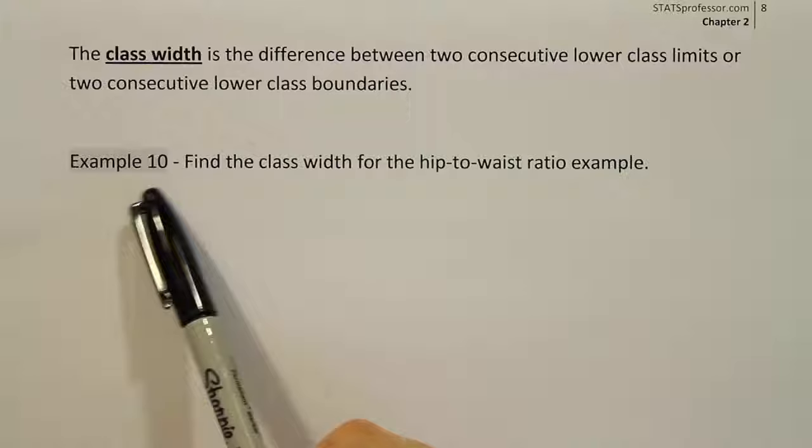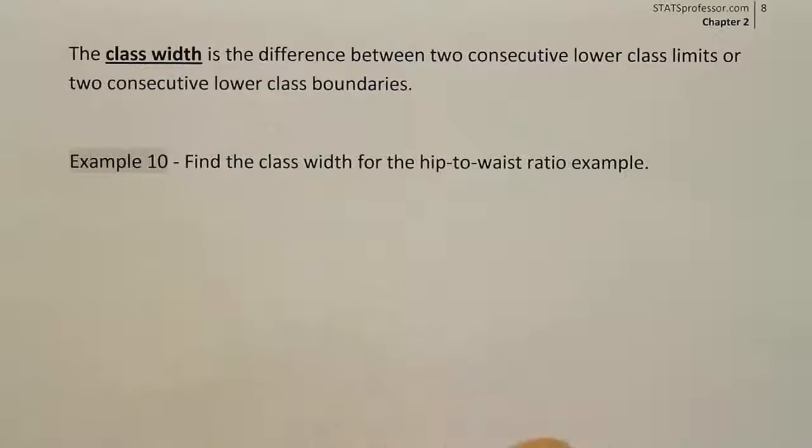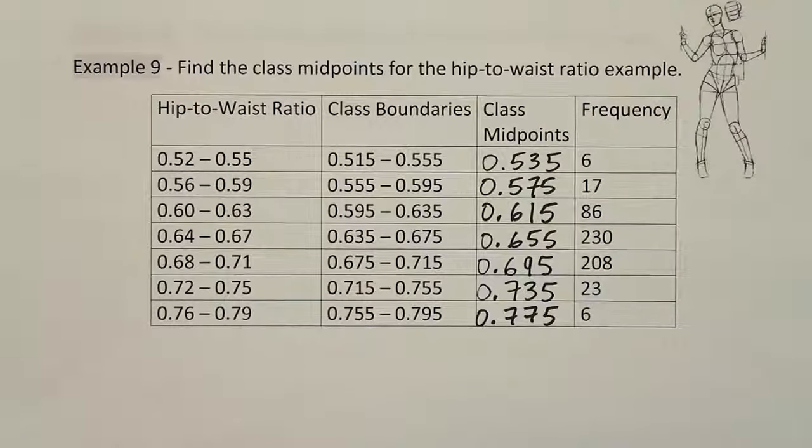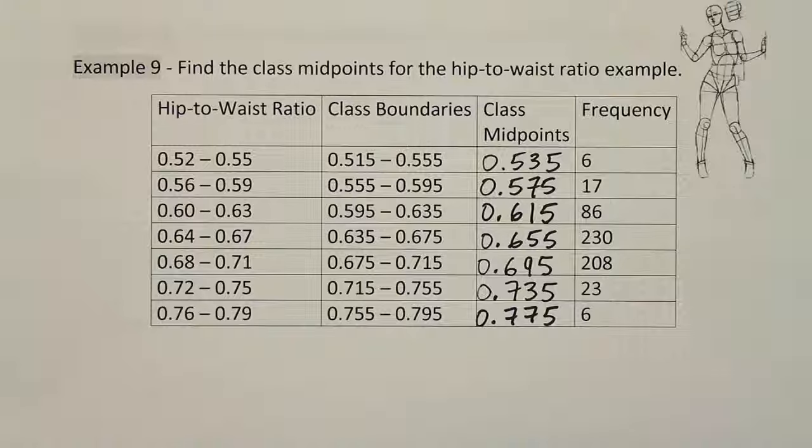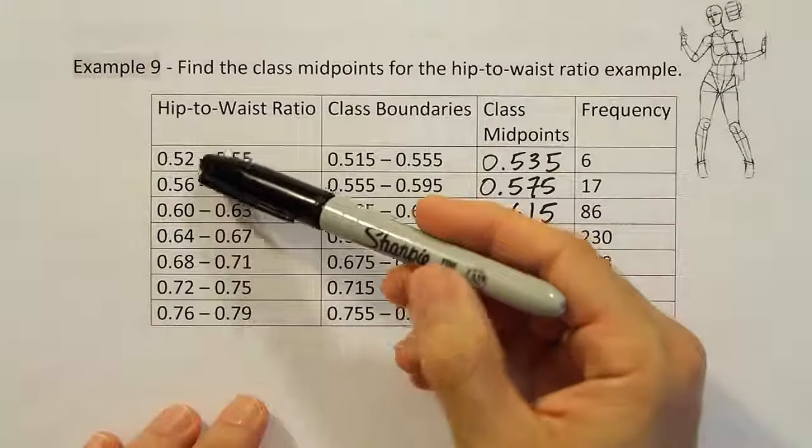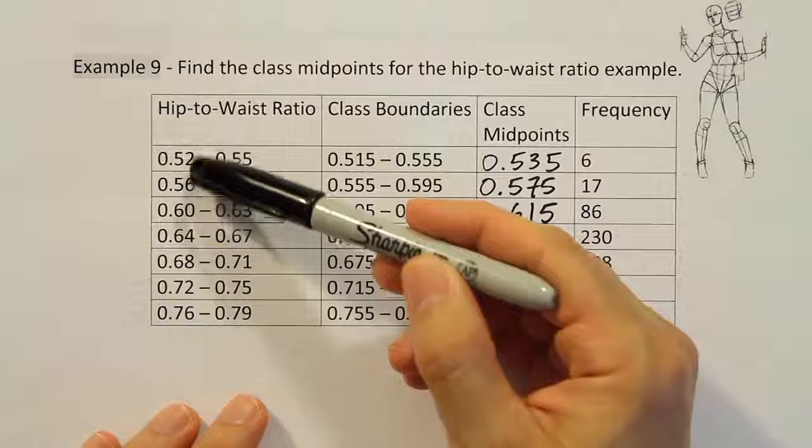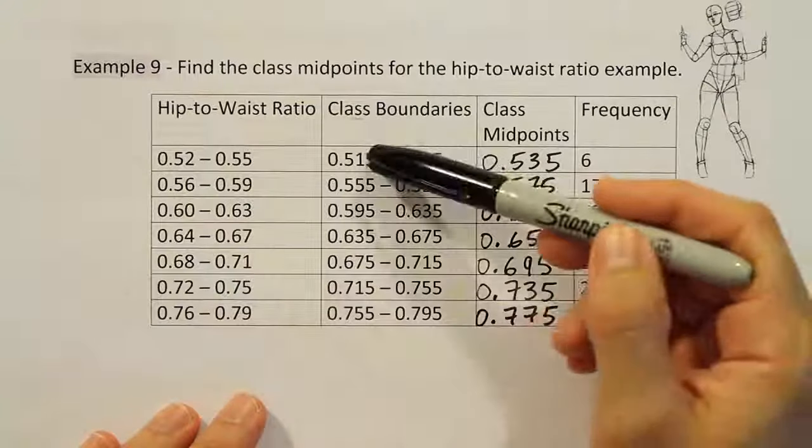And it says for example 10 to find the class width for the hip-to-waist ratio example that we just looked at. So here's that example we were just looking at and in order to find the class width all we have to do here is to subtract any two lower class limits or lower class boundaries.